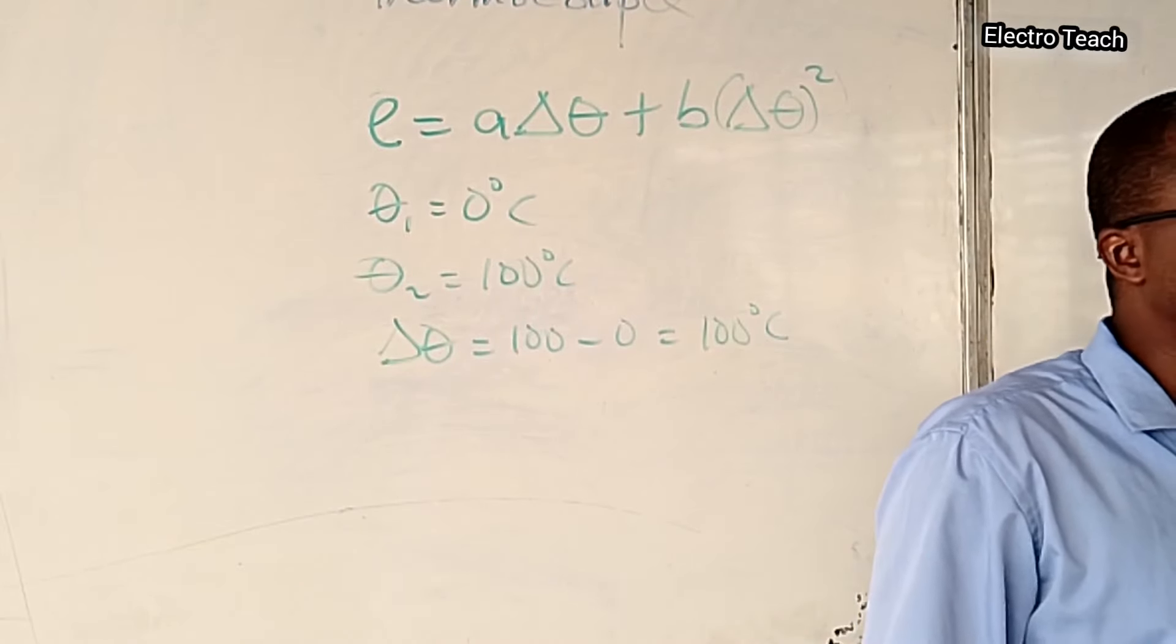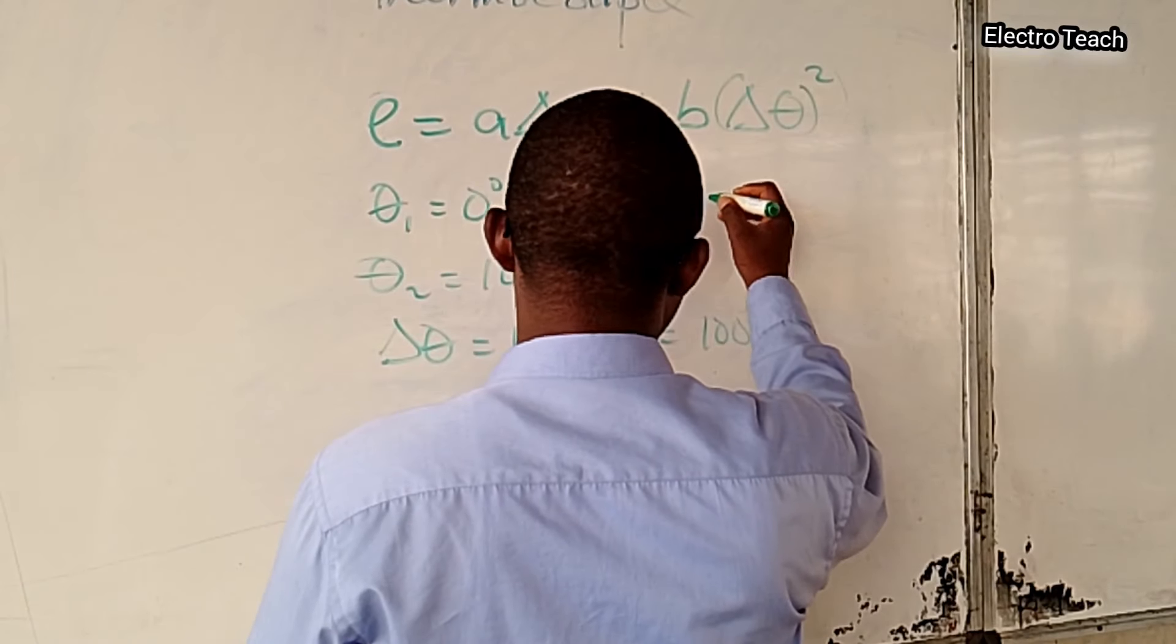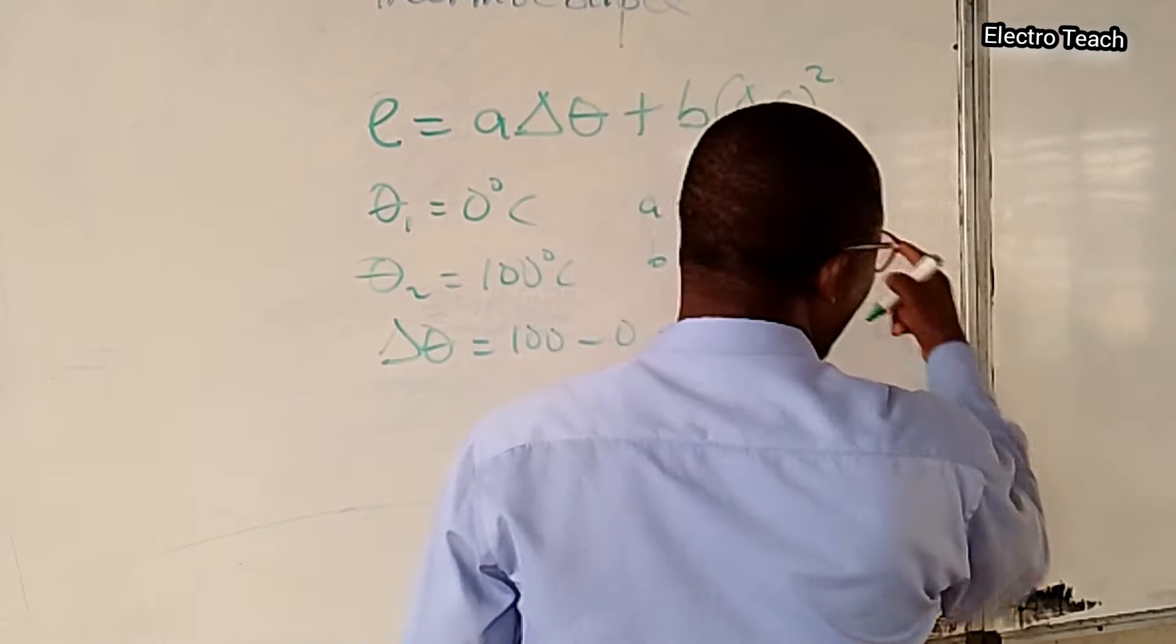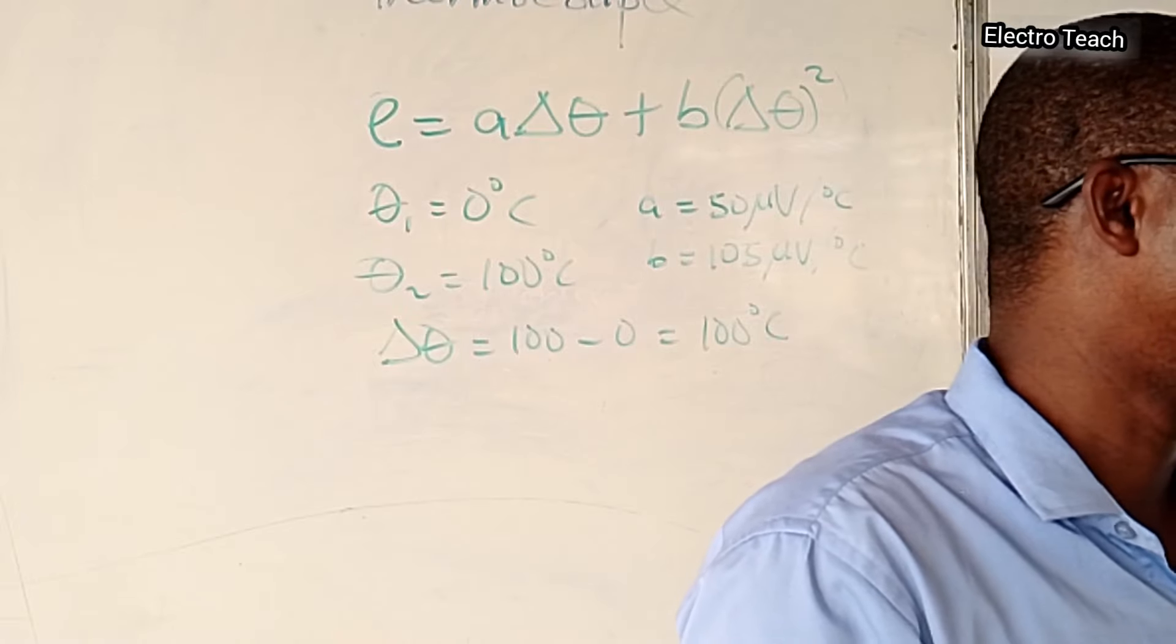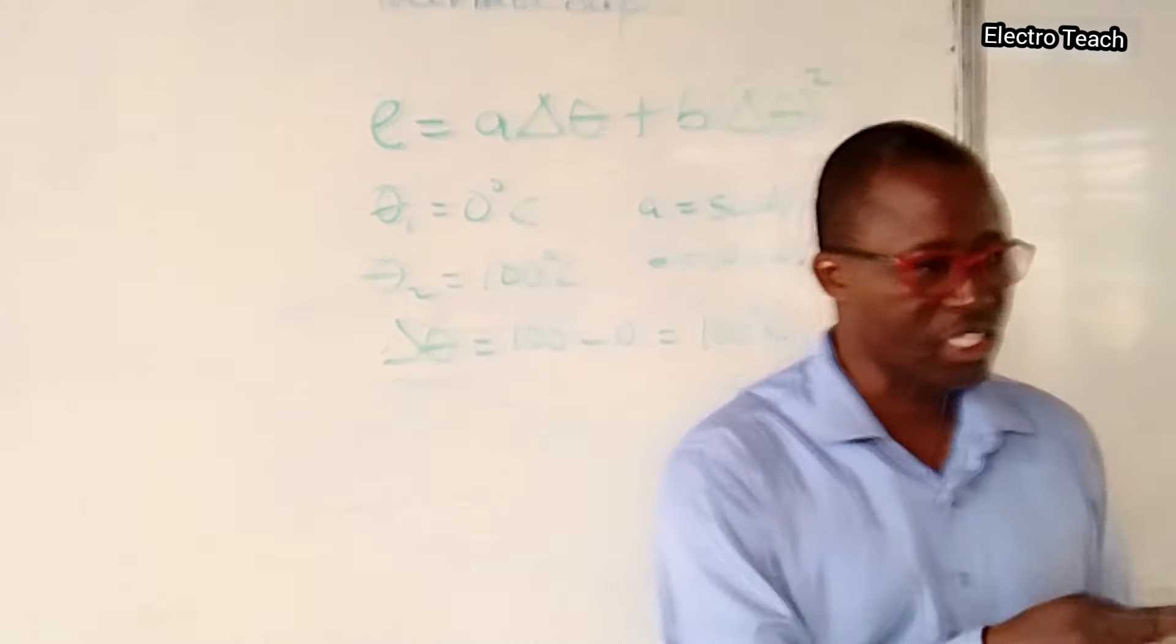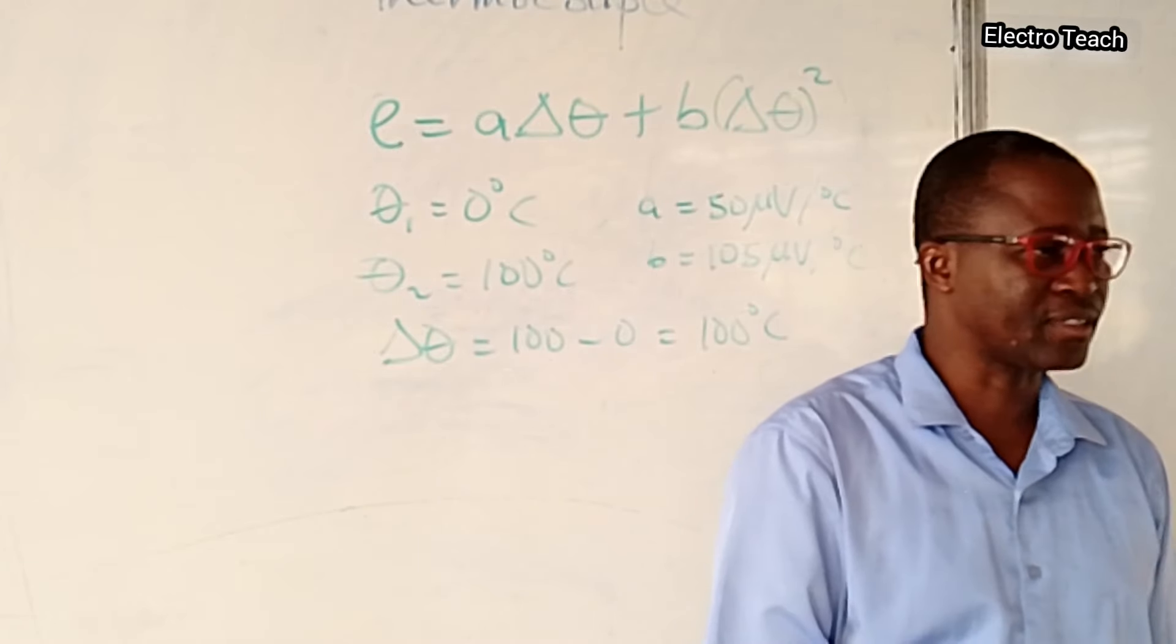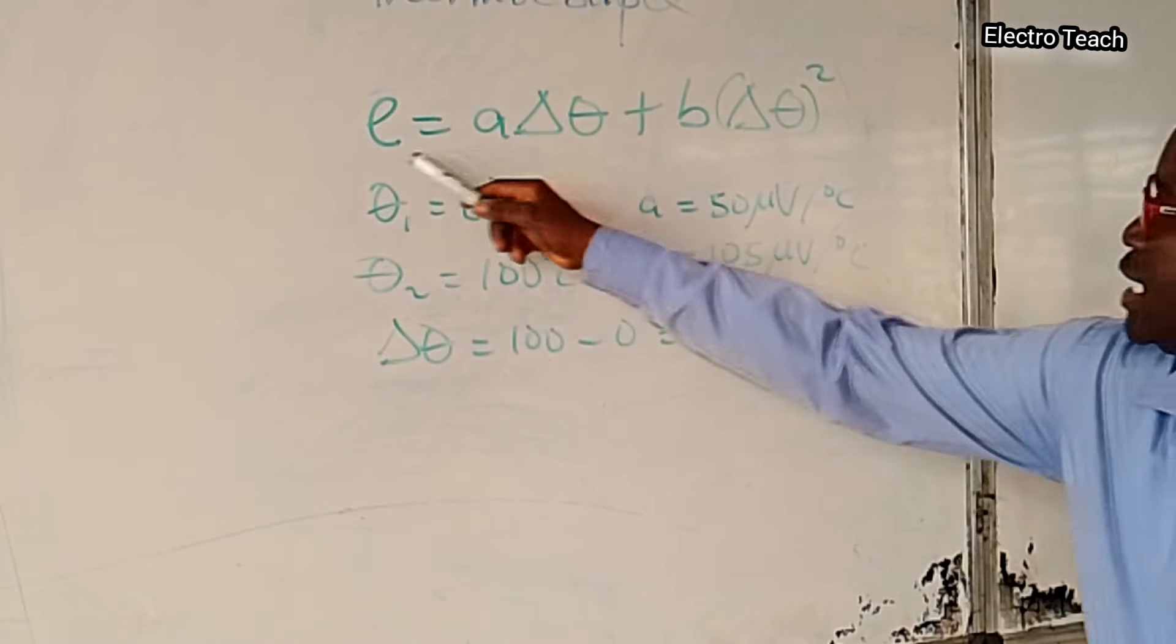Then we are given the thermoelectric constants A and B. A equals 50 microvolts per degree Celsius, and B equals 105 microvolts per degree Celsius. Don't forget, A and B are constants determined by the type of material used for the metals. If it is copper, if it is aluminum, if it is constantan, or whatever metal is used to make the thermocouple, the constants will be fixed for that particular metal. But the constants are not the same for different metals. So we can now use these items in this formula. Right now, I want you to work it out. I have the answer here in the notes, but you tell me what your answer is.